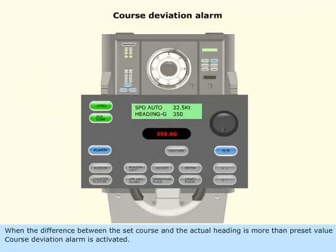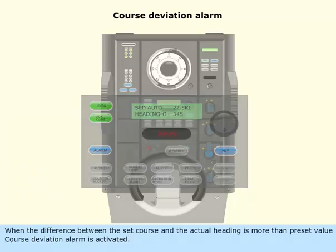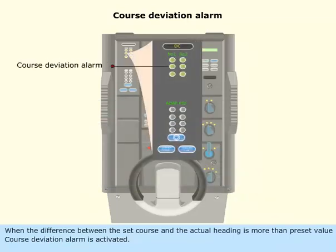When the difference between the set course and the actual heading is more than the preset value, the course deviation alarm is activated.